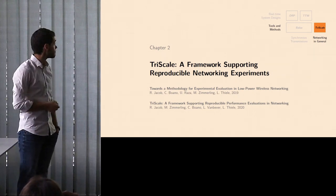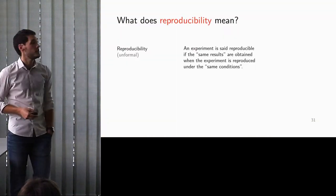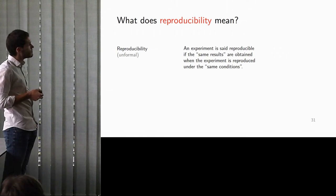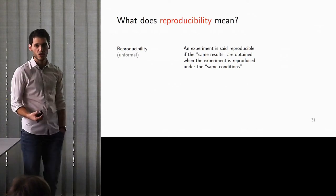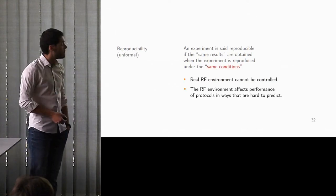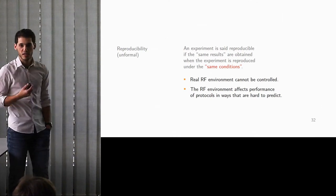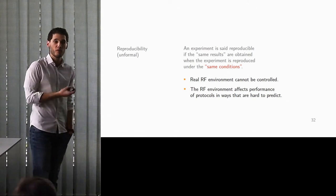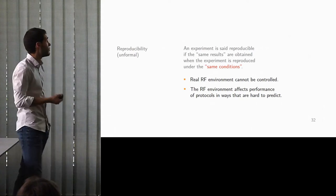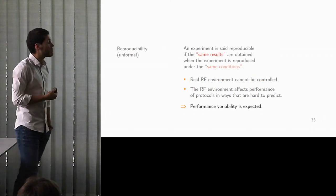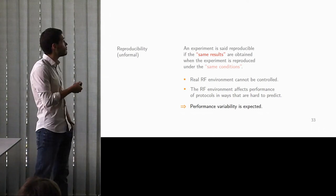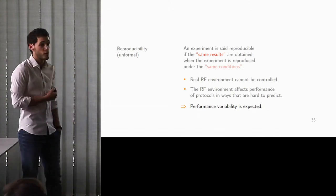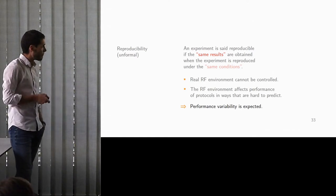So what is reproducibility? Informally, we could say that an experiment is reproducible if we can obtain the same results when we rerun the experiment under the same conditions. Now, the first issue we have is with the same conditions. Because we are doing radiofrequency network, we have a radiofrequency environment that we cannot really control, and we know that it will impact the performance of our system very strongly. So we cannot really obtain this. Therefore, how would you qualify or quantify what same results actually mean? We know we expect performance variation. So how much is expected and how much is tolerable to consider being reproducible?